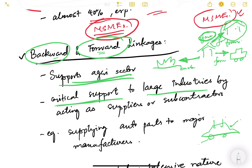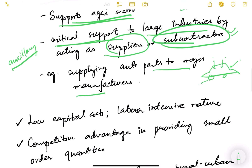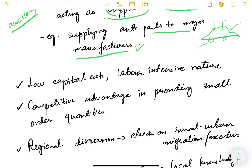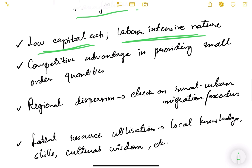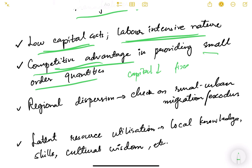MSMEs provide critical support to large industries by acting as suppliers or subcontractors — these are known as ancillary industries. For example, they supply auto parts to major manufacturers. Another benefit is that MSMEs have low capital cost and are labor-intensive, so they provide more employment. They also have a competitive advantage in providing small order quantities because their fixed capital cost is low.